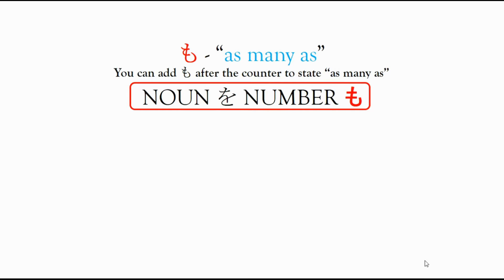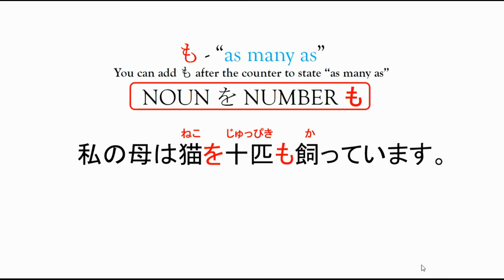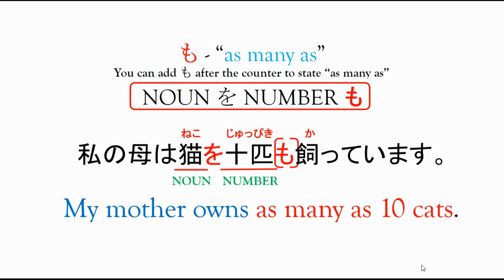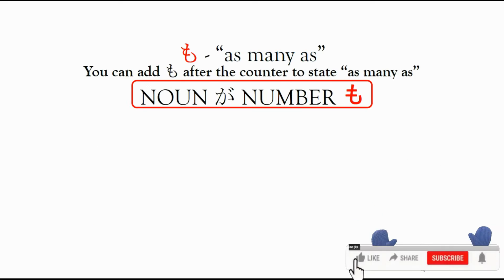The pattern will be: noun o + number + mo. For example: watashi no haaha wa, neko o, juppiki mo, katteimasu. This means my mother owns as many as 10 cats. The noun here is neko, the number is juppiki, and we added mo to state 'as many as' — so neko o juppiki mo means 'as many as 10 cats'.